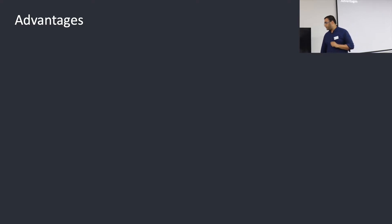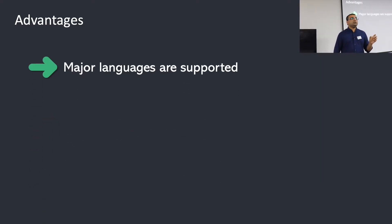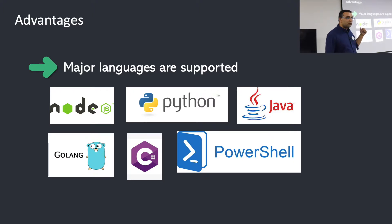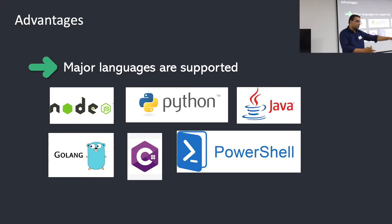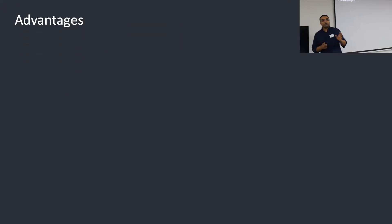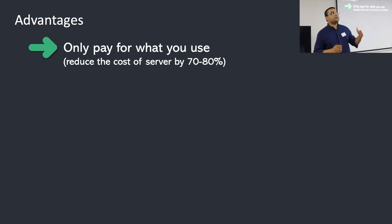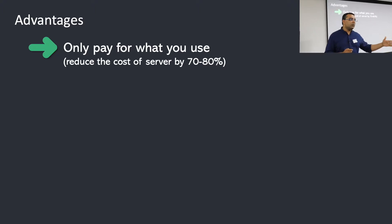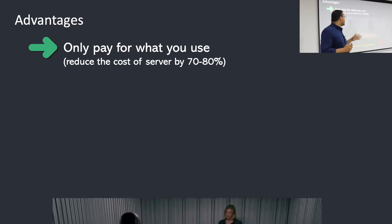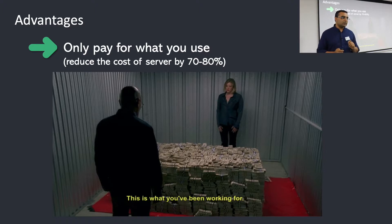Serverless supports almost all major languages — Node.js, Python, Java, Golang, C#, and PowerShell — but right now the most popular are Node.js and Python; most serverless backends are written in those two. Another advantage is you pay only for what you use. If you deploy a server at twenty dollars a month and only get two to ten requests, you still pay twenty dollars. With serverless, you only pay per request.